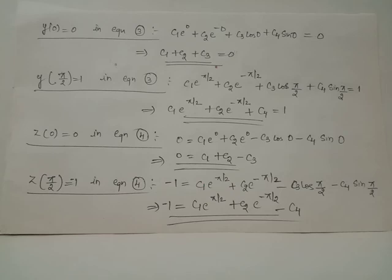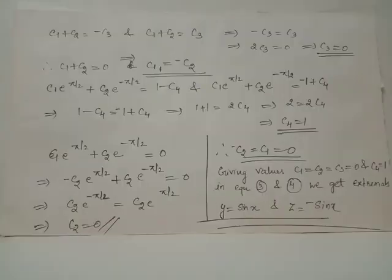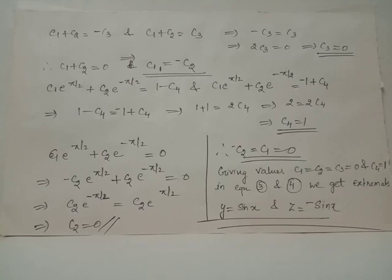We have four unknowns c1, c2, c3, and c4 and four equations. Solving the four equations, we get c1, c2, c3 are all 0 and c4 equals 1. Substituting these values in equations 3 and 4, we get the required extremals as y equals sin x and z equals negative sin x. When we have two dependent variables, we will have two Euler's equations to be solved and we get two extremals.